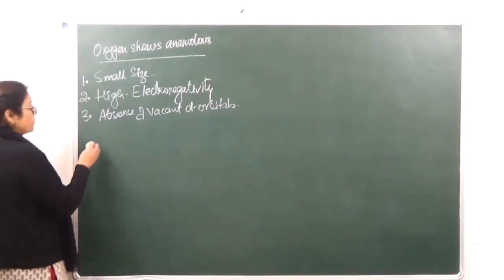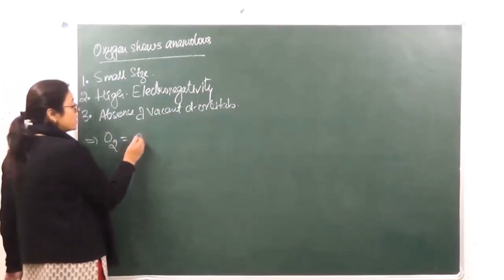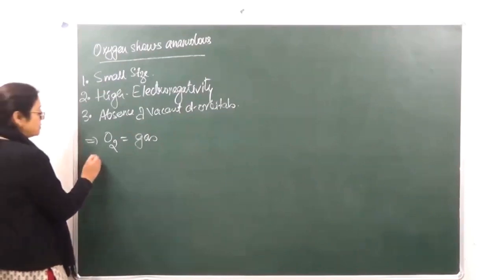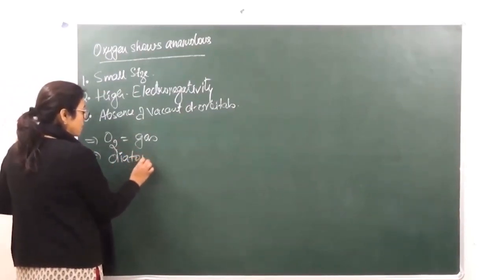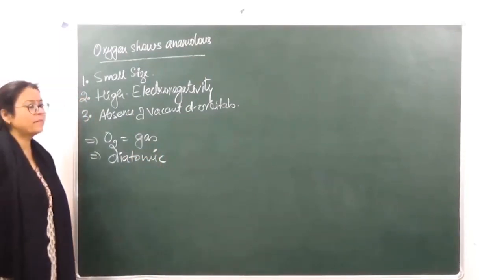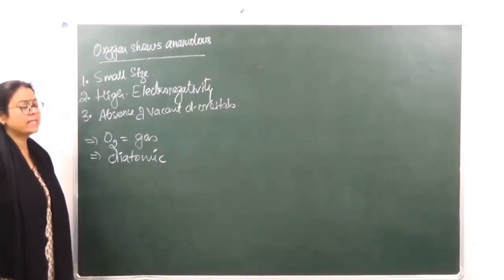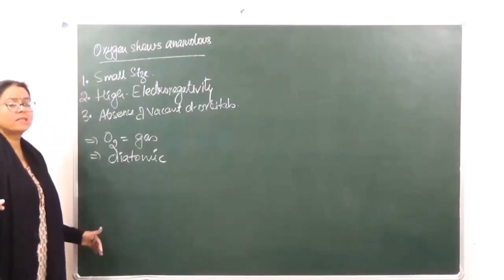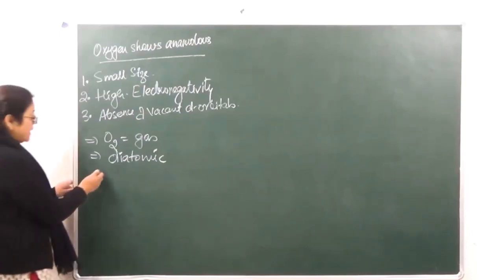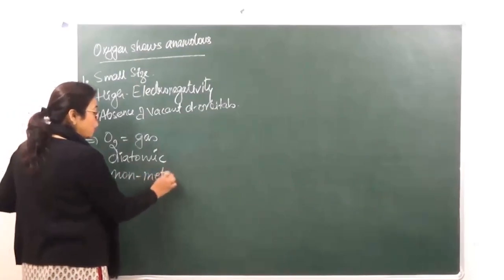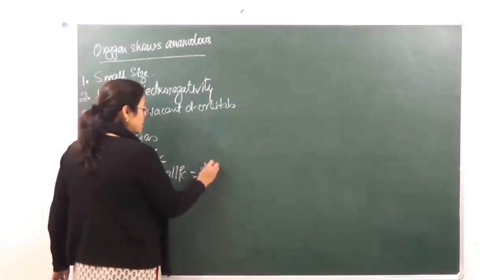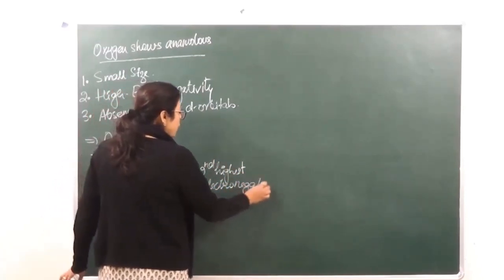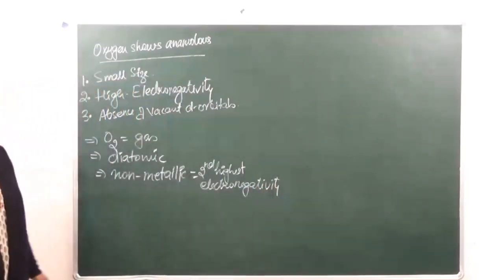Because of this, oxygen shows different behavior from the rest of the members. The first point of difference is that oxygen exists as a gas, whereas sulfur and others exist as solids. Number two, oxygen is diatomic in nature — it exists as O2 — whereas the rest have complex structures like the S8 puckered ring structure. Number three, oxygen is highly non-metallic because of the second highest electronegativity.